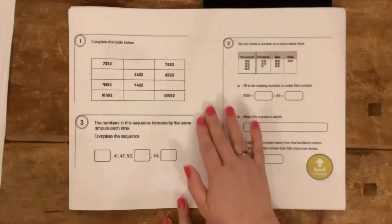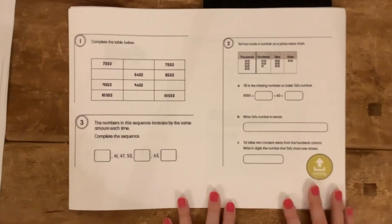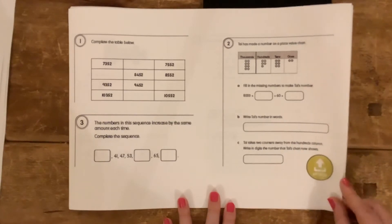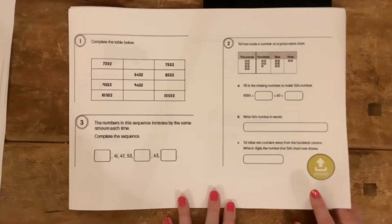Make sure that you are showing any workings because even if you get the final answer wrong in some questions, if your workings show that you actually knew how to answer the question and it's been a simple miscalculation that's caused you to get the wrong answer, you may still get a mark for showing your workings. Please make sure that you read all the questions carefully, take your time, read it again, think about what it's asking you to do and then take your time to fill in the answers.